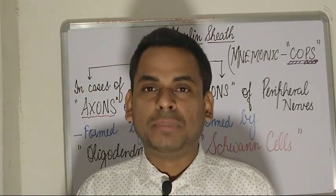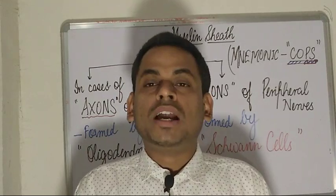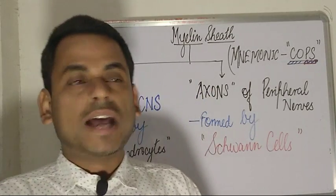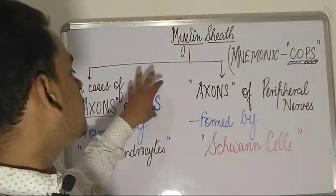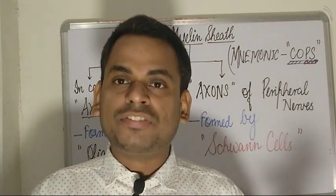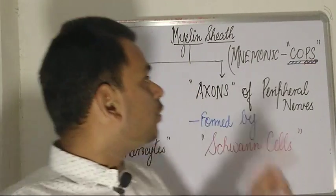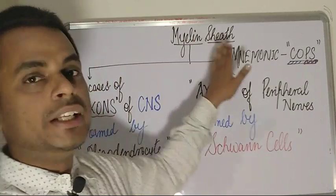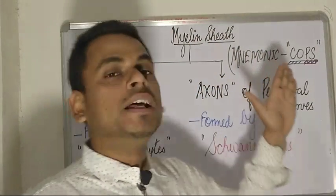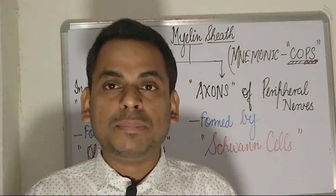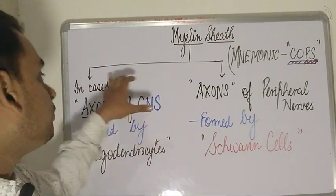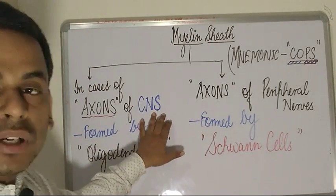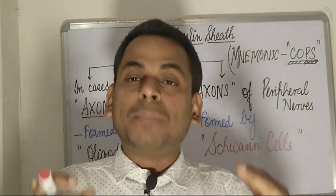It becomes very difficult and cumbersome to remember, particularly in PG entrance and NEET entrance exams, where MCQs are asked about where the myelin sheath of myelinated nerve fibers is derived from. Today's discussion will focus on a mnemonic to easily recall what cells the myelin sheath is derived from in the central nervous system and in the peripheral nervous system.